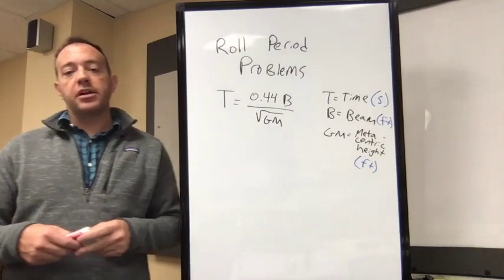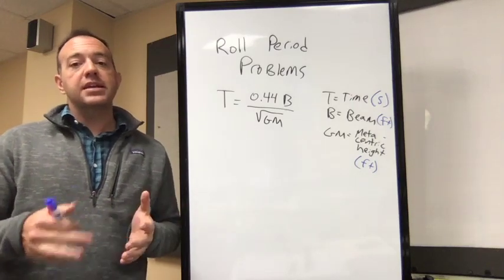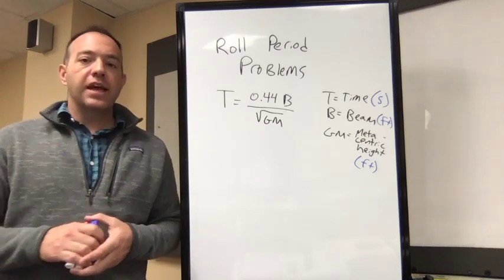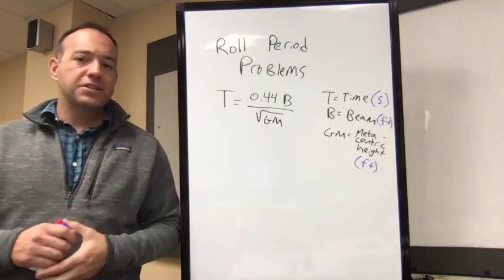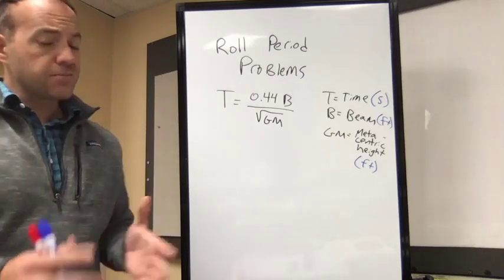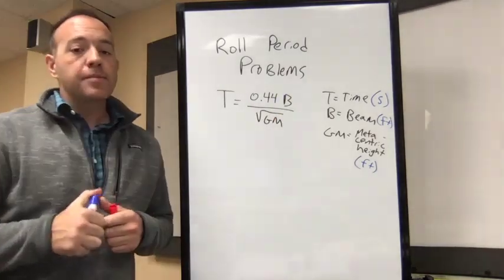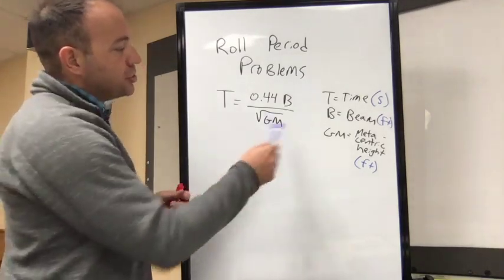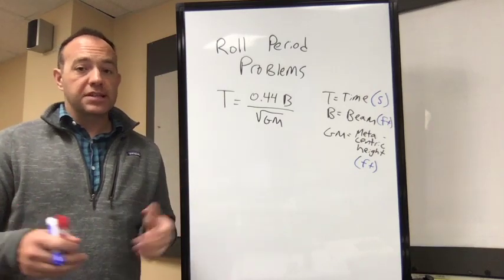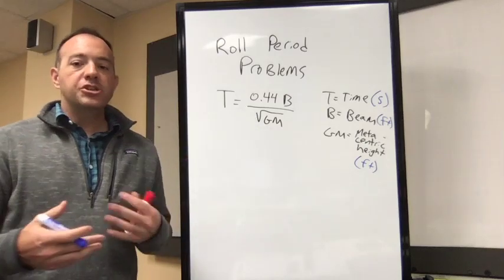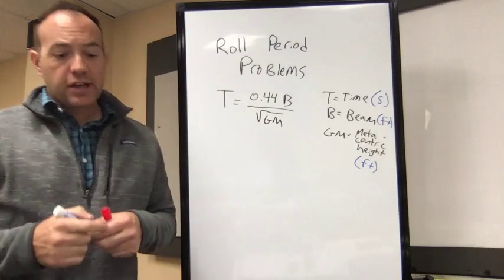The roll period is a measure of stability on your vessel. If the vessel's roll period changes, it's an indicator that something has changed with your stability. In search and rescue, if a fishing vessel I knew rolled at a certain rate and suddenly it was taking a very long time to roll back and forth, I knew that vessel was not stable and wouldn't put my crew aboard. Time is in seconds, B the beam is the widest portion of the vessel, and GM is a height measurement of where the center of gravity is relative to the metacenter.